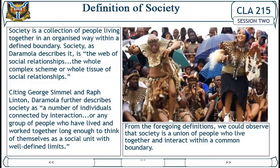Definition of society: society is a collection of people living together in an organized way within a defined boundary. As Dera Moller describes it, society is the web of social relationships — the whole complex tissue of social relationships. Citing Georg Simmel and Ralph Linton, Dera Moller further describes society as a number of individuals connected by interaction, or any group of people who have lived and worked together long enough to think of themselves as a social unit with well-defined limits.